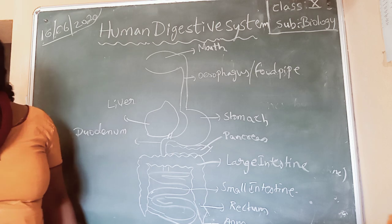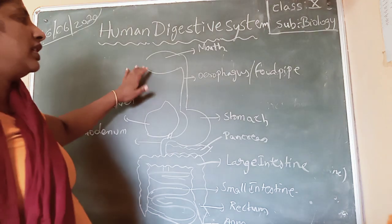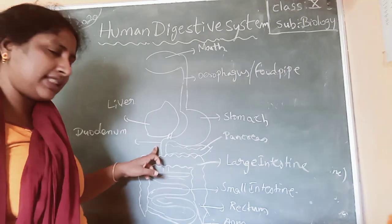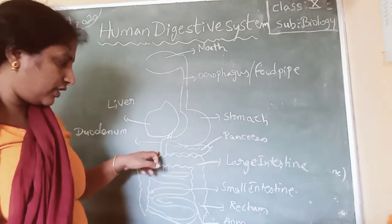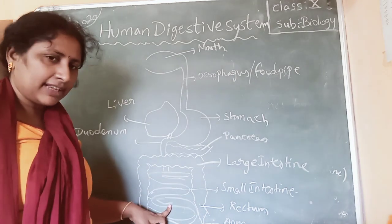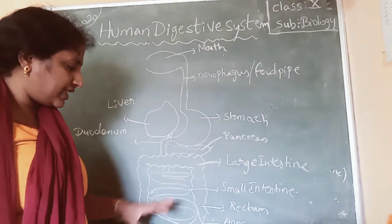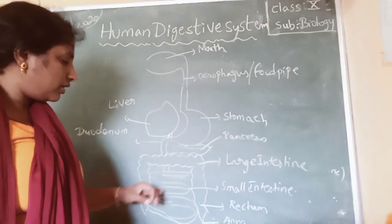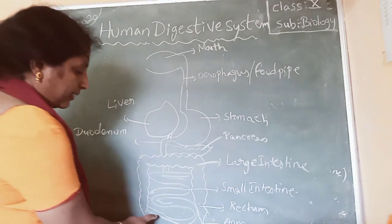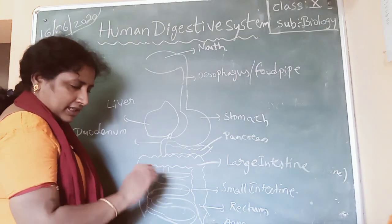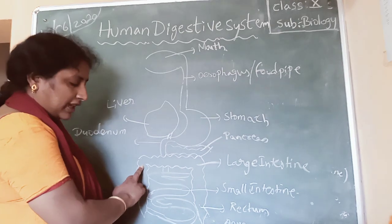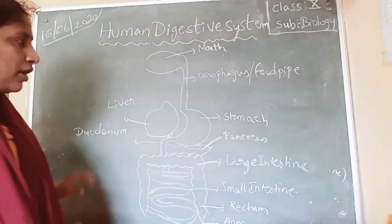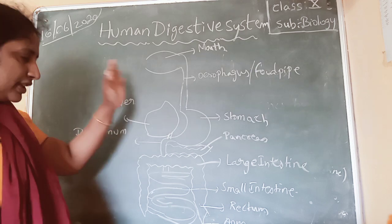This is the rough diagram of the human digestive system. It starts with the mouth, which opens into the esophagus. The esophagus opens into the stomach. The stomach opens into the duodenum, which is the first part of the small intestine, and continues into the second part of the small intestine. Here complete digestion of food occurs and absorption of nutrients into the blood starts. The undigested food from the small intestine moves into the large intestine, comes to the rectum, and comes outside through the anus. This is the process of how digestion takes place in the human body.